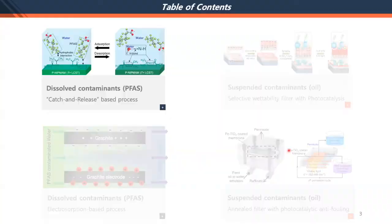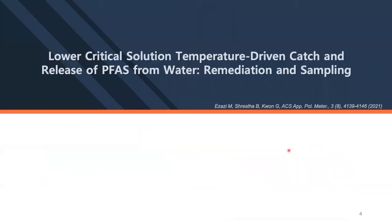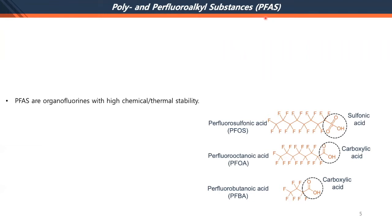Let me start with our first work: lower critical solution temperature (LCST)-driven catch and release of PFAS from water. Before that, let me briefly introduce PFAS — poly- and per-fluoroalkyl substances. These are organic fluorine compounds with very good chemical and thermal stability. PFAS is grouped into two categories: long chain such as PFOS or PFOA (octanoic), and short chain such as butanoic or pentanoic.